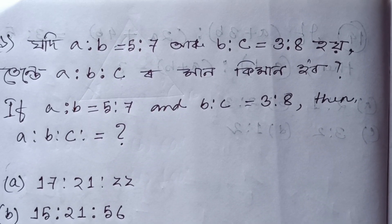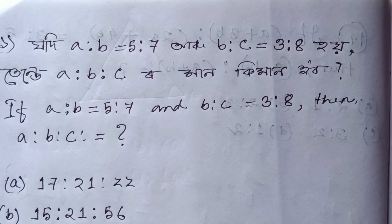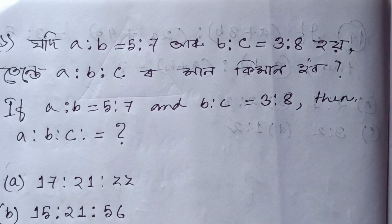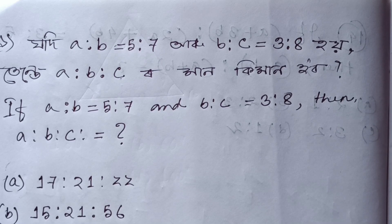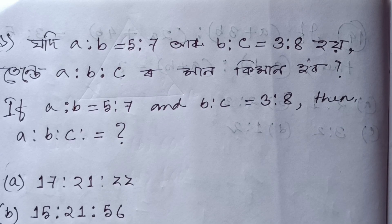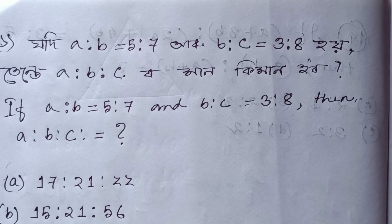The first question is: if A is equal to 5 to 7 and B is equal to 3 to 8, then A is equal to B is equal to 0.